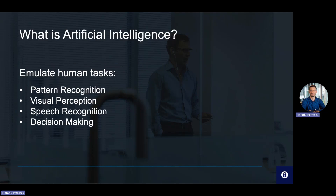At its core, AI systems are designed to emulate tasks that typically require human intelligence. These tasks span a broad spectrum. For example, pattern recognition identifies trends and regularities in data. Visual perception helps to recognize objects, faces, and scenes. Speech recognition assists in translating spoken words into text, or decision-making for processing information to make informed choices. These capabilities have found applications across various industries, streamlining operations and enhancing user experiences.